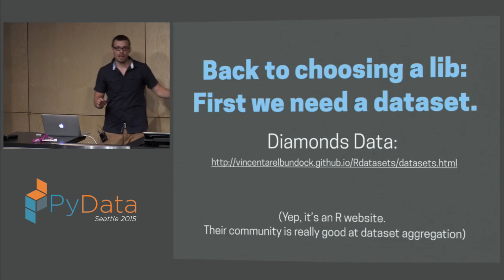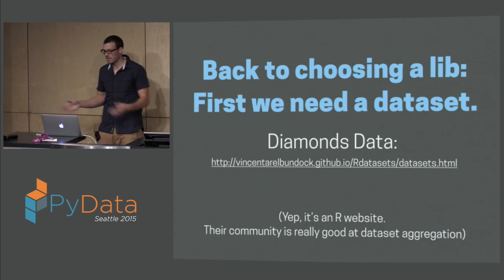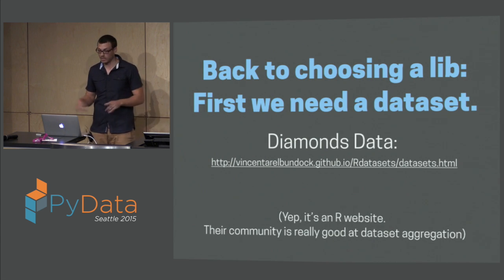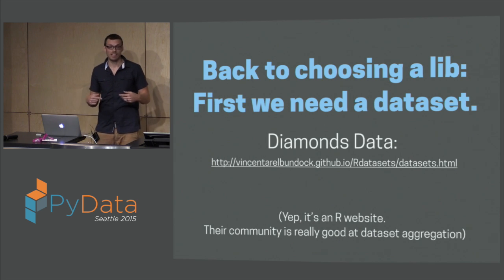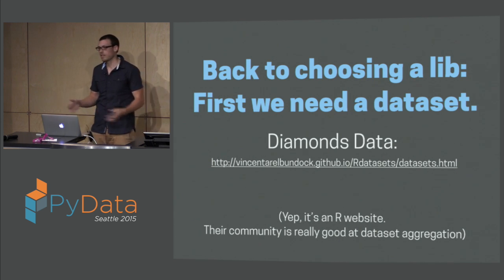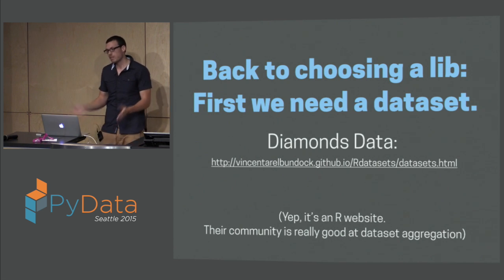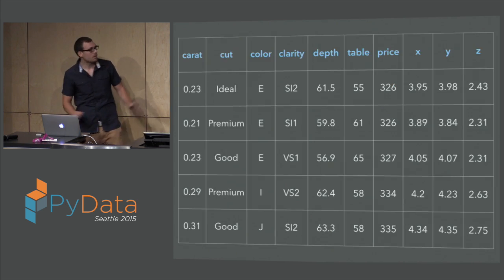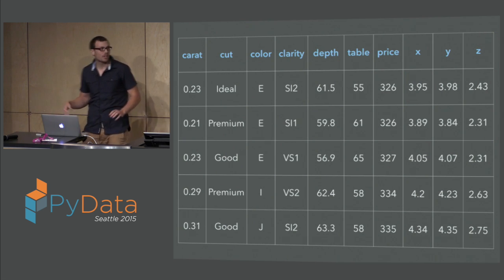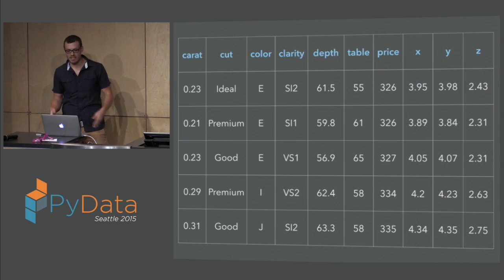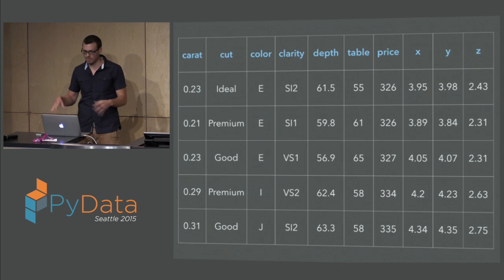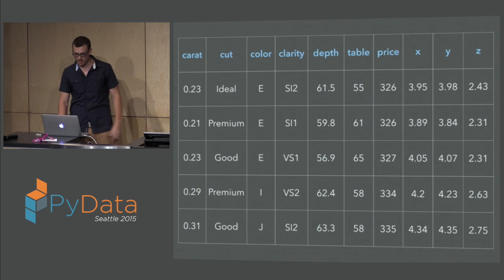Back to choosing our library and our bike analogy. For some of these examples, we need a dataset. I've linked to this Diamonds dataset, which was actually aggregated by someone in the R community. That community is excellent at dataset aggregation — they're actually way better than us at building packages around datasets, which is really useful when you're looking to do examples. This is a really familiar dataset for a lot of people. Each diamond has a carat, cut, color, clarity, depth — a nice mix of categoricals, integers, and floats.